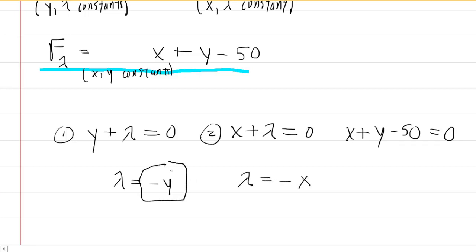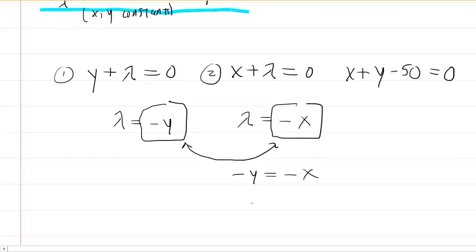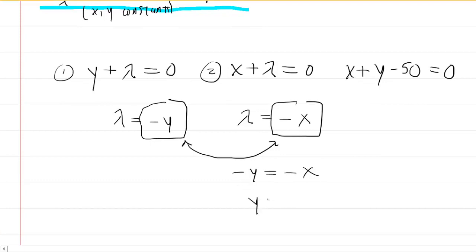Now, this is equal to lambda and this is equal to lambda, so that means these have to equal each other. So basically, we can now say that negative y is equal to negative x. Those two would be equal to one another. We can divide a minus 1 on both sides, so this just means that y will equal x. And then we can finally move over to the third equation. We know that y is equal to x, so we can take this y right here and replace it with x. So now that third equation would be x plus x minus 50 is equal to 0, which of course is 2x minus 50 equals 0. We'll add the 50 to the other side and then divide by 2, and we can see that x is equal to 25.